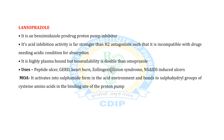Lansoprazole is a benzimidazole proton pump inhibitor like omeprazole. Its acid inhibition activity is far stronger than H2 antagonists, such that it is incompatible with drugs needing acidic conditions for absorption. It is highly plasma protein bound and its bioavailability is double that of omeprazole. It activates into sulfenamide form in an acidic environment and binds with two sulfhydryl groups of cysteine amino acids at the binding site of the proton pump. It is mainly used in Zollinger-Ellison syndrome, NSAID-induced ulcer, peptic ulcer, and GERD.